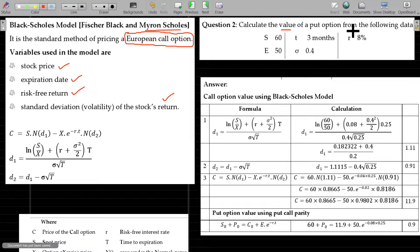Calculate the value of a put option from the following data: spot rate 60, exercise price 50, term being 3 months, and standard deviation being 0.4. Rate of interest 8% per annum, which is 2% for 3 months.